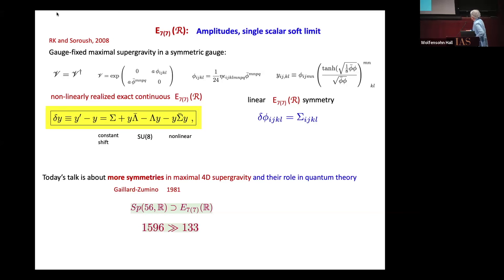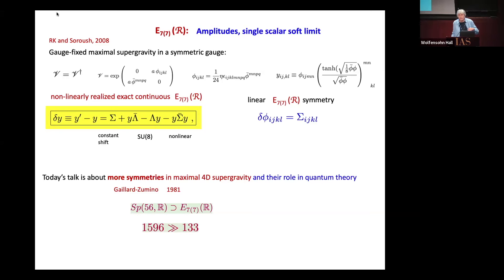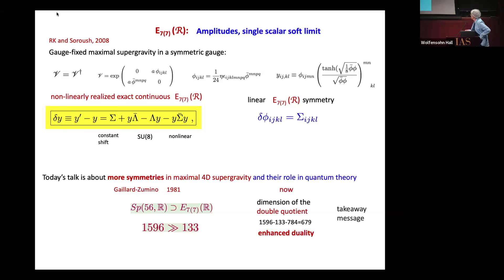Today I'll talk about more symmetries than E77, because E77 didn't explain the analog of the enhanced cancellation of AT2 diagrams in N equals 5. So let's go to the main topic: the role of Gaillard-Zumino asymmetries. The first point is that SP56 is much bigger than E77. But the subtlety is that it is not just the difference between SP56 and E77, but the dimension of the double quotient, which I'll explain, that is relevant.